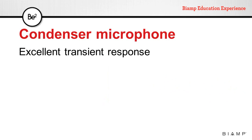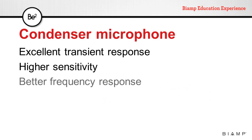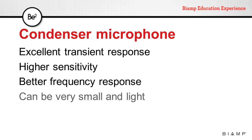Due to having to move only a very light diaphragm, condenser microphones usually have excellent transient response. They also have higher sensitivity, which means that they can pick up softer sounds. They generally have better frequency response. They can be very small and light, but they do require power for proper operation.